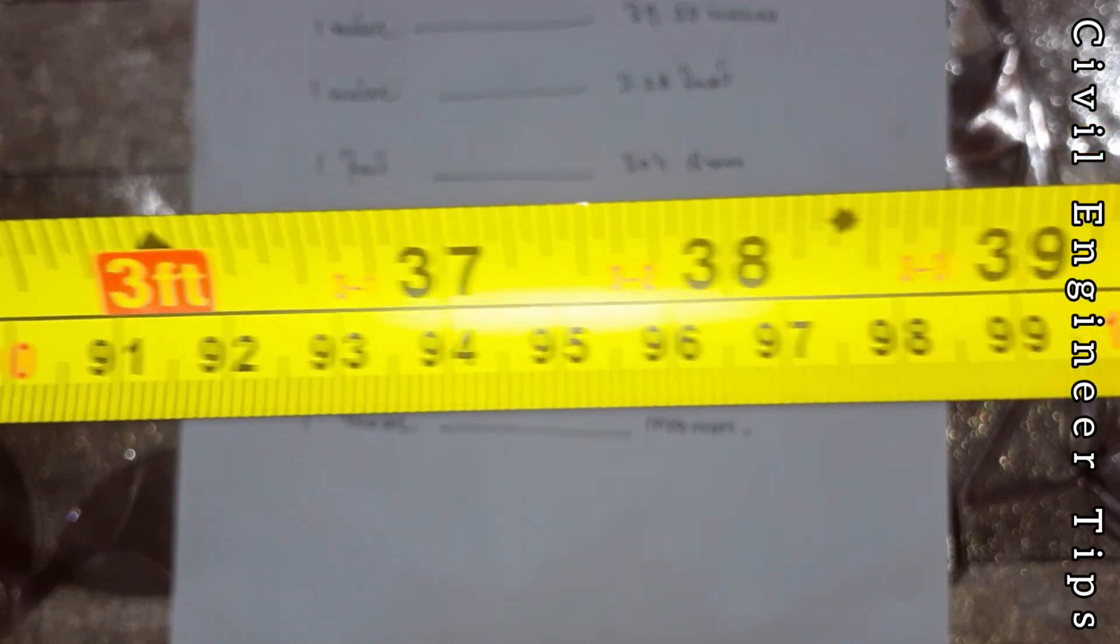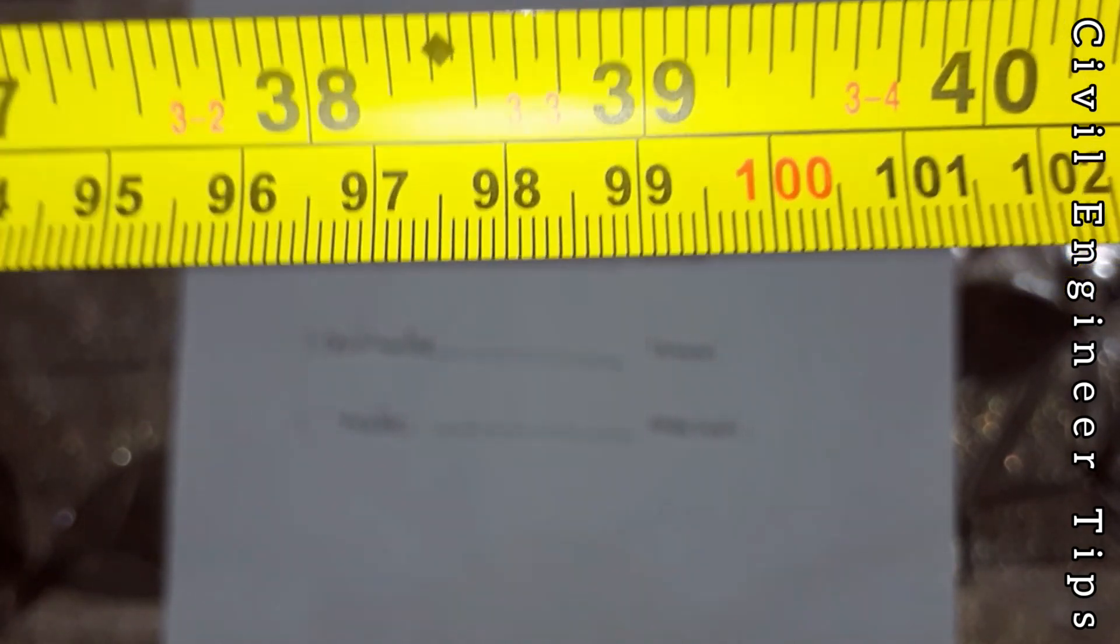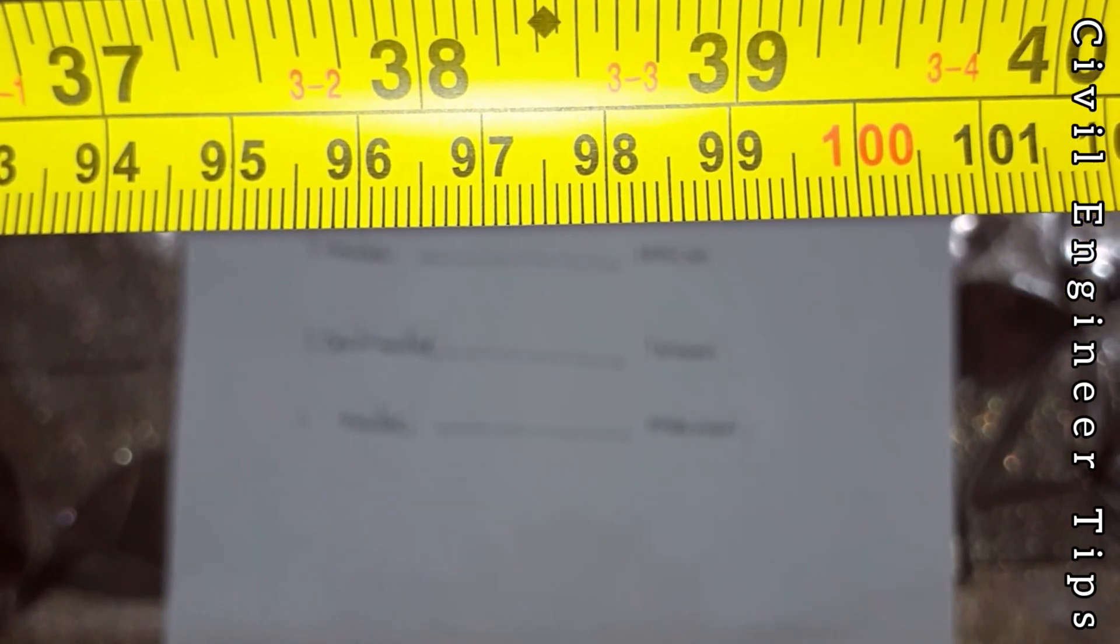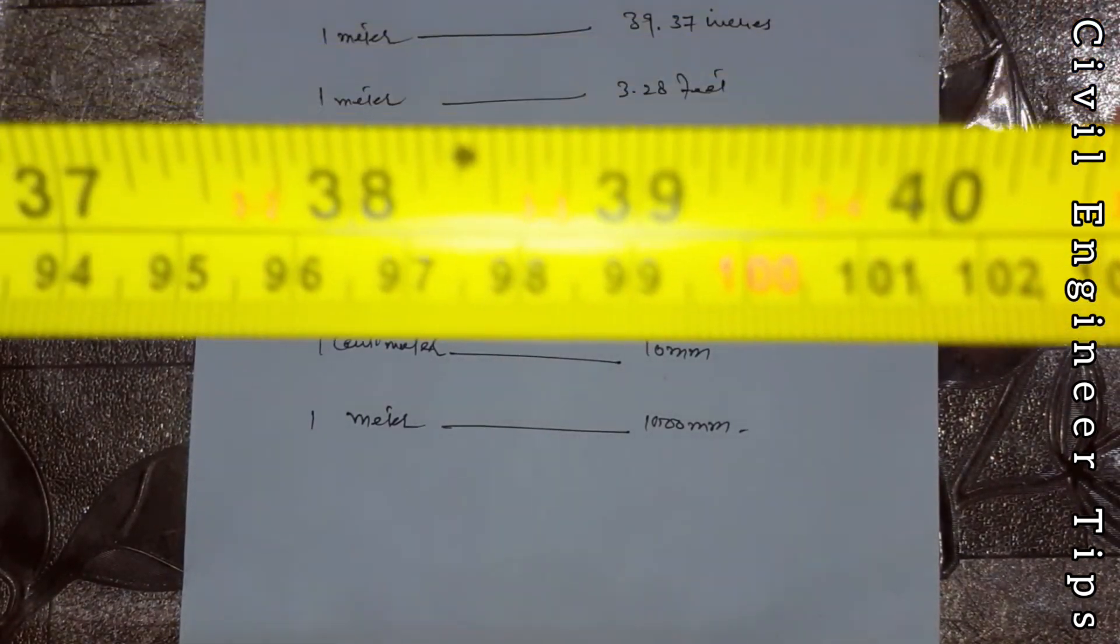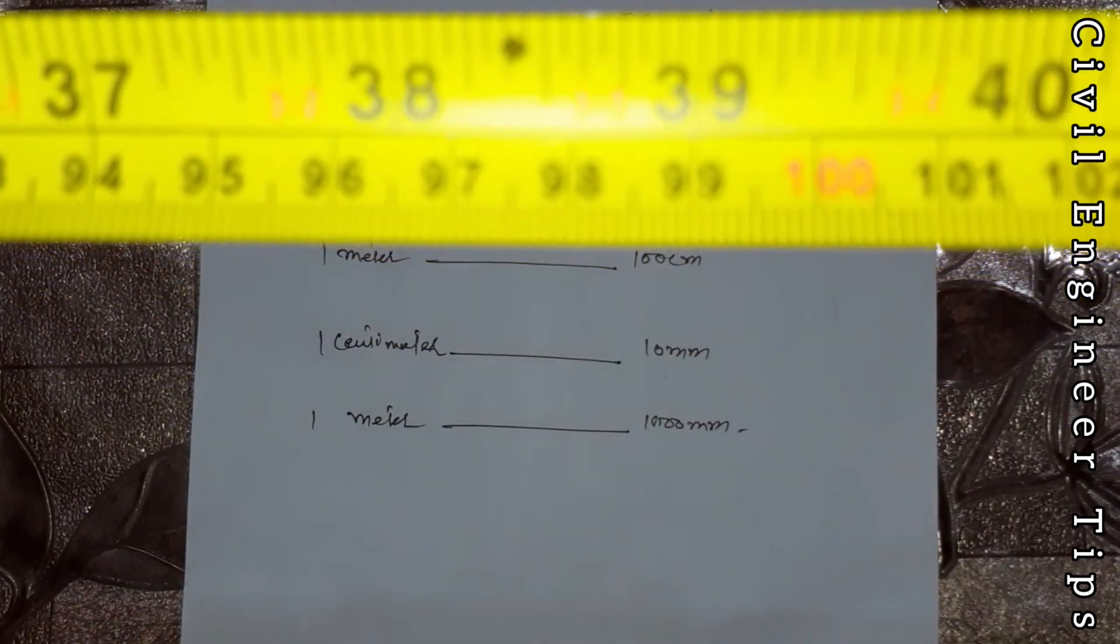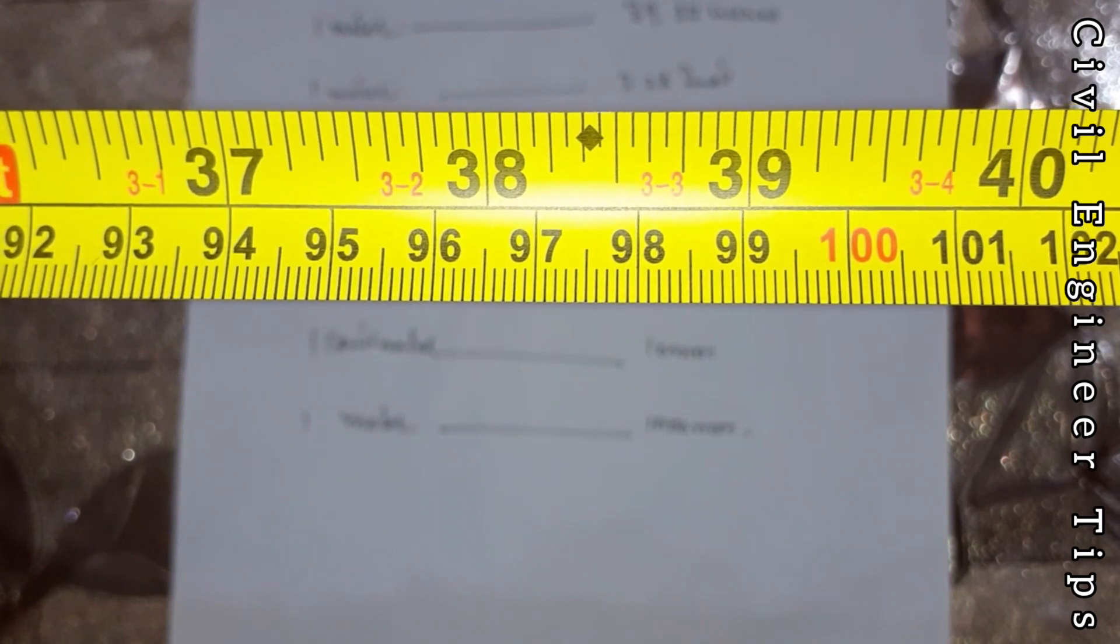1000 millimeters. This is one meter, as you know well, and one meter is equal to 1000 millimeters.